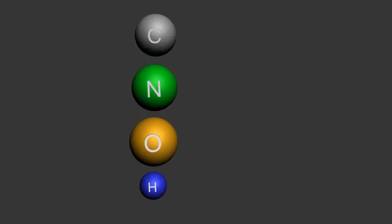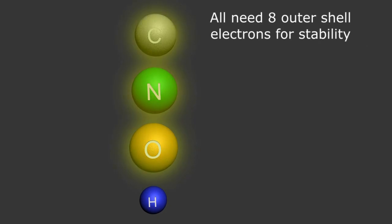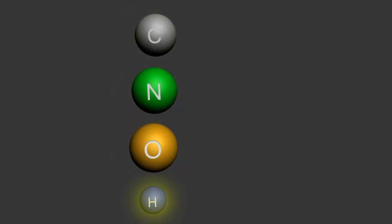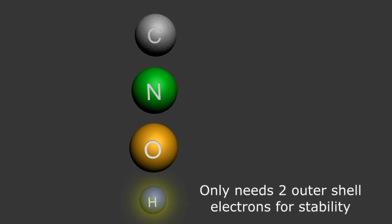For most of these atoms, that magical number is 8 orbiting electrons. The exception is hydrogen, the smallest of all atoms, only requiring 2 electrons to complete its lone S subshell.